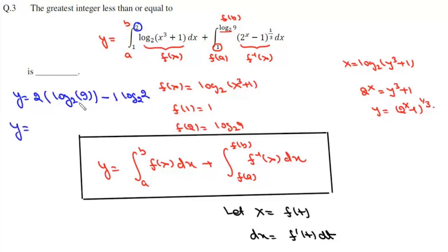So value of this y is, now 9 is 3 squared, so it will be 4·log₂(3) - 1.